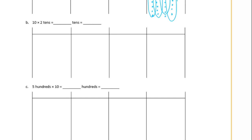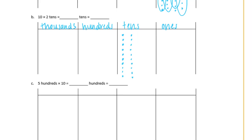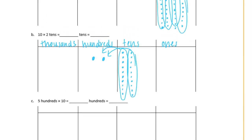B. 10 times 2 tens. Let's label again. So we have ones, tens, hundreds, and thousands. And this time we have 10 groups of 2 tens. So we have 10. Each of these little dots represents 10, so all of these together would be 100. 10 groups of 10 is 100. So we can add that over here to 100 — there's 1 group of 100. And here's another 10 groups of 10, which is another 100. So 10 times 2 tens equals the 20 tens. And 20 tens is equal to 200.